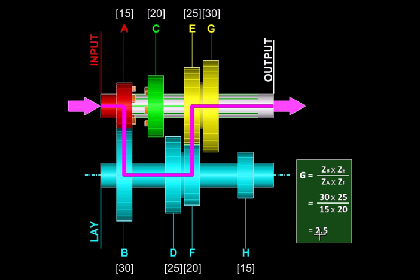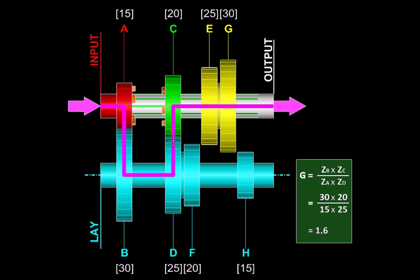In the third gear we are going to engage these two gears. So now the reduction is even smaller, say 1.6, and finally we are going to go to the top gear.